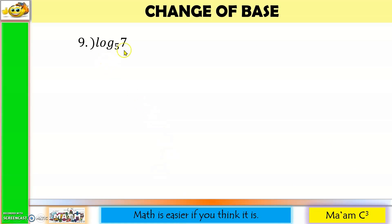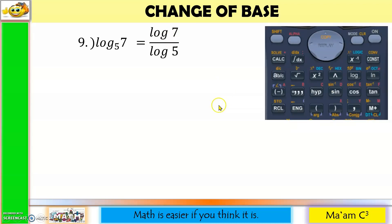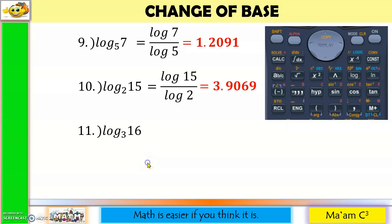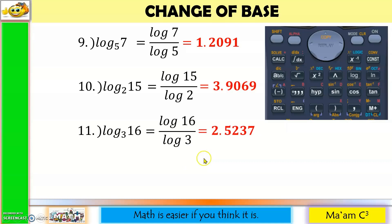Let us continue. The logarithm of 7 to the base 5 becomes the logarithm of 7 divided by the logarithm of 5. Since there is no way you can express this as a power having the same x and b, you really have to make use of a calculator. So you just press log of 7 divided by log of 5, and the answer is 1.2091. Another one will be the logarithm of 15 divided by the logarithm of 2, and the answer is 3.9069. Next: the logarithm of 16 to the base 3 is the logarithm of 16 over the logarithm of 3, which is equal to 2.5237.